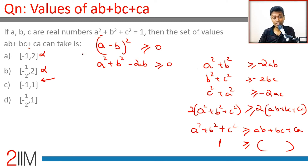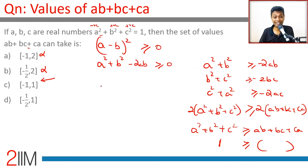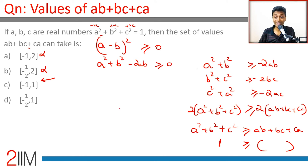If all three of a, b, c are negative, ab + bc + ca is positive. If all three are positive, it's also positive. If one is negative — say a is negative — then a·b is negative and a·c is negative, but b·c is positive, which can offset the negatives. So the minimum might not reach -1.